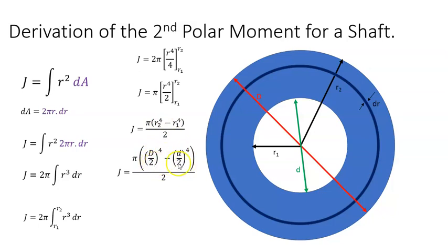We have a common denominator, 2 to the power of 4. We get D to the power of 4 minus d to the power of 4, and the denominator is π times 2 times 2 to the 4, which is 2 to the 5, or 32. So the second polar moment of a hollow shaft is π(D⁴ - d⁴)/32, where D is the large diameter and d is the diameter of the hollow part.